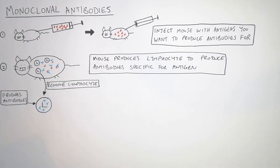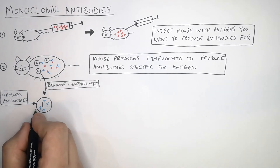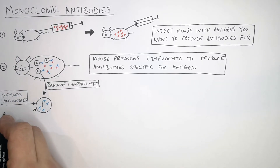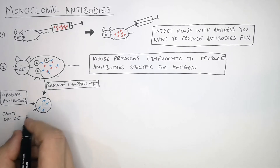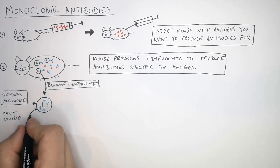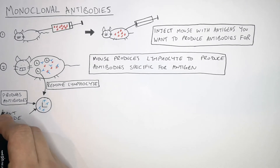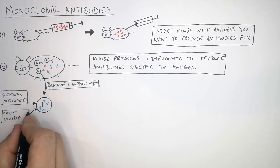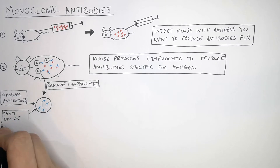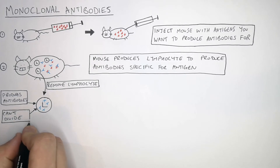Even though the B lymphocyte can produce antibodies, it cannot divide. This is very important — the B lymphocyte cell cannot divide.